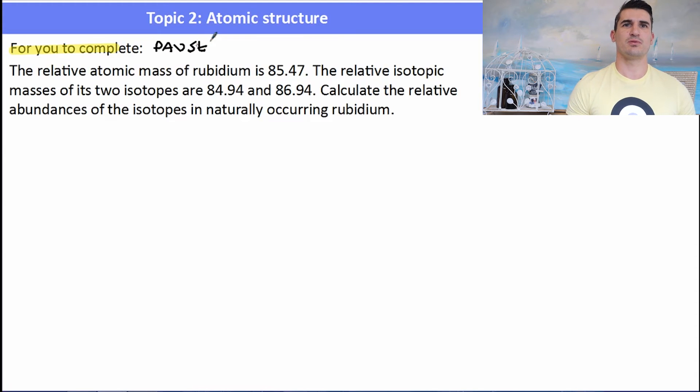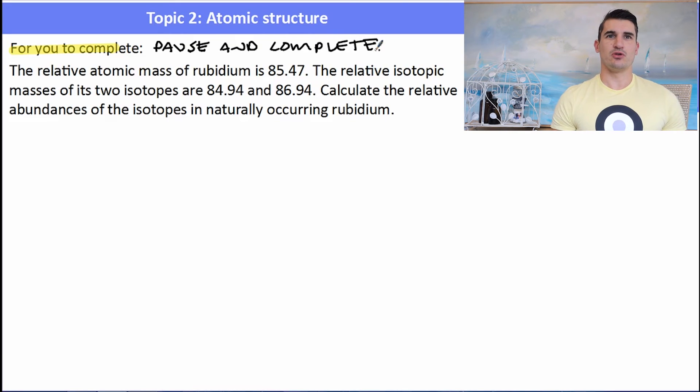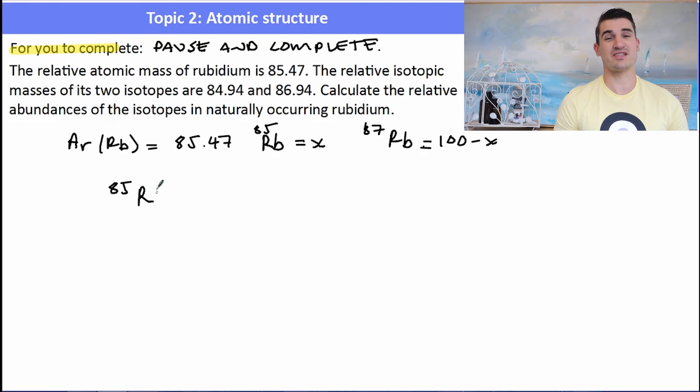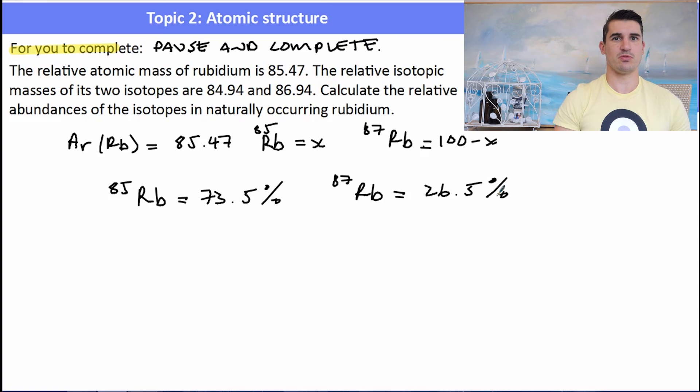So here's one for you to complete. This one is about rubidium. I want you to set it up exactly as the last one. So here's my solution. I needed to set it up in the exact same way with the lighter isotope being the X and the heavier isotope being a hundred take away X. After doing the calculation, I found that rubidium-85 was 73.5% and rubidium-87 was 26.5%. How did you go? Let me know in the comments below.